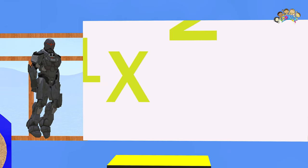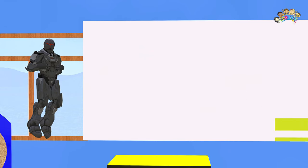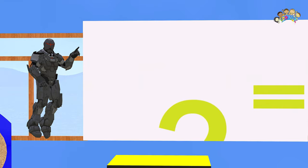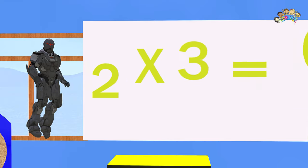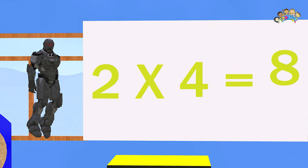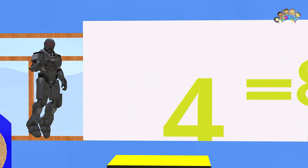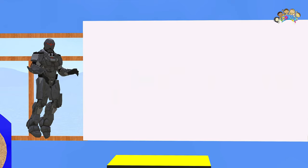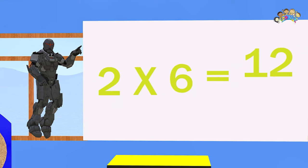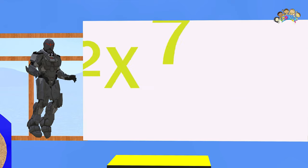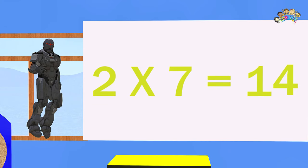Let's try the twos. One times two is two. Two times two is four. Two times three equals six. Two times four equals eight. Two times five equals ten. Two times six equals twelve. Two times seven equals fourteen.